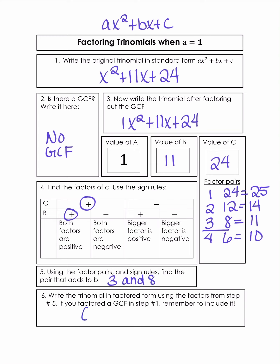So that means when we write this in factored form, we're going to have x plus 3 times x plus 8. Remember that if you had a GCF in step 2, you would go ahead and add that in here. We don't have a GCF, so we're just going to leave that as our answer.